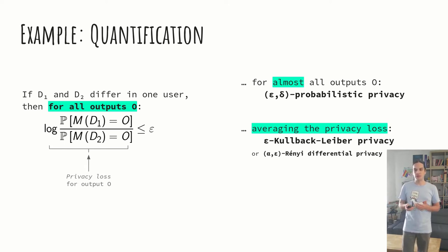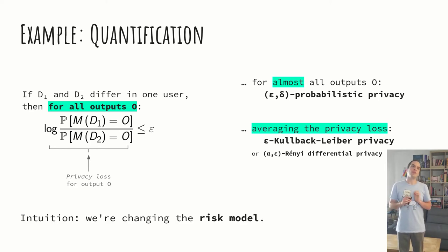What else can we do on the definition of differential privacy? And, more importantly, how do we classify definitions along those axes? That first example changes the risk model. Instead of considering the worst case property, we consider the almost worst case, or the average case. So, this is changing the risk model, is what these sort of group of definitions are doing.